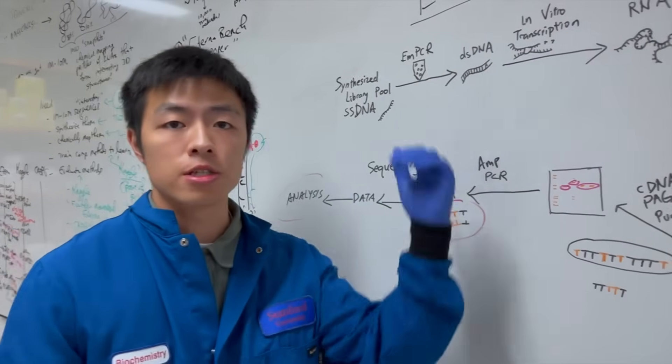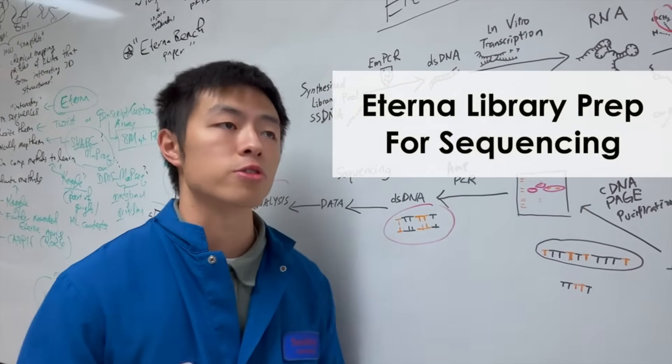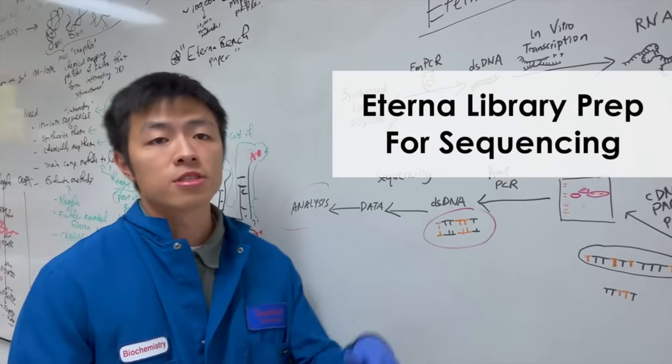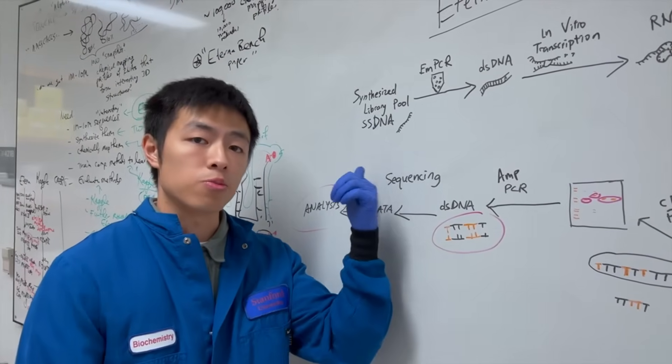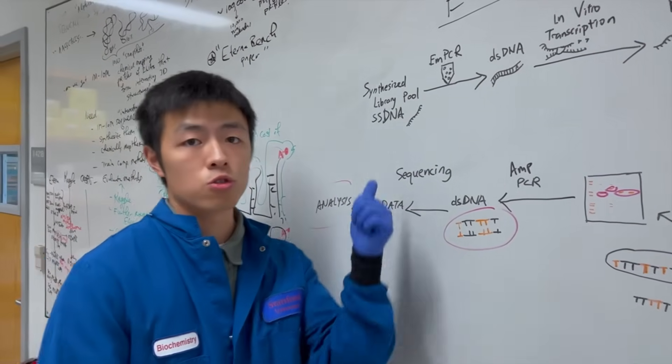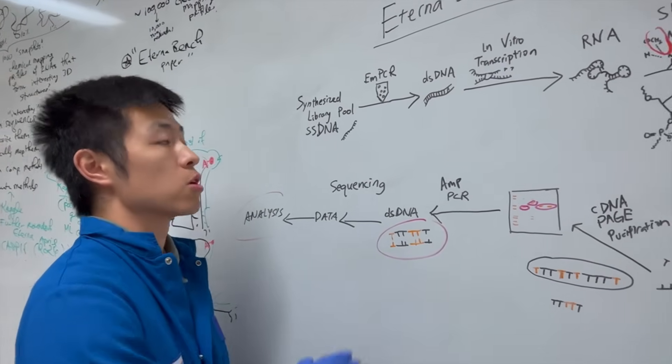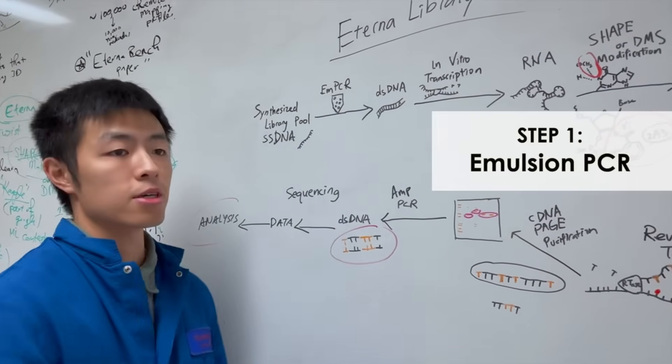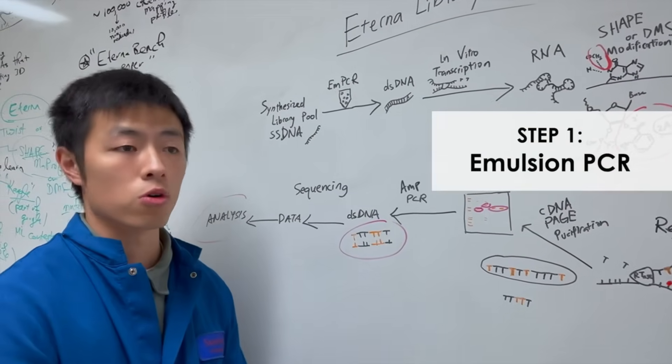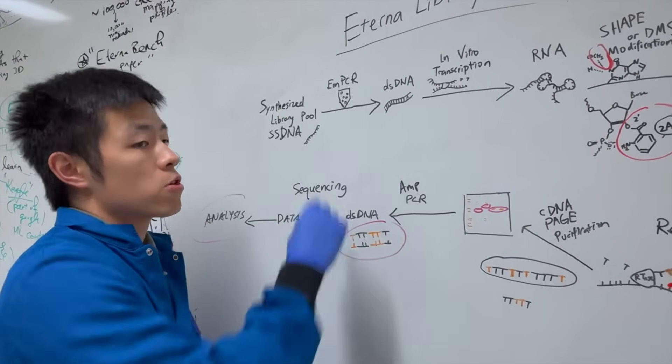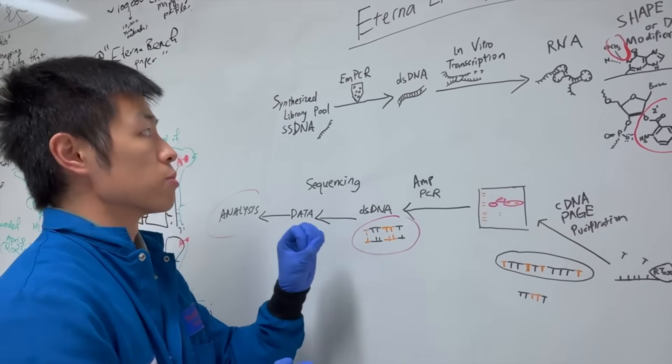This is the general process of Eterna library prep for sequencing. When we get our synthesized Eterna library design pool from vendor, it comes with single-stranded DNA. So, we have to put it through this process called emulsion PCR. Essentially, it's an emulsion of the PCR reaction with mineral oil. So, the PCR reaction is trapped into these tiny bubbles.